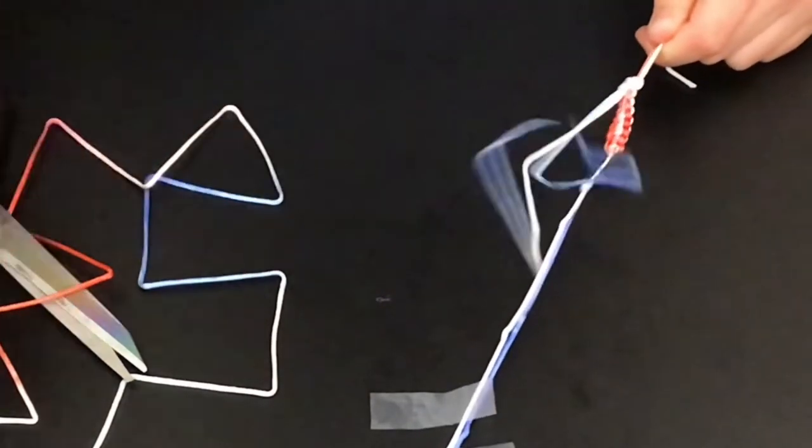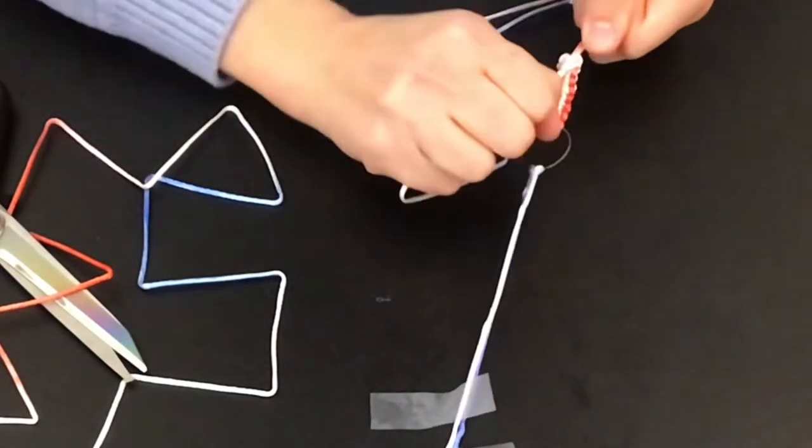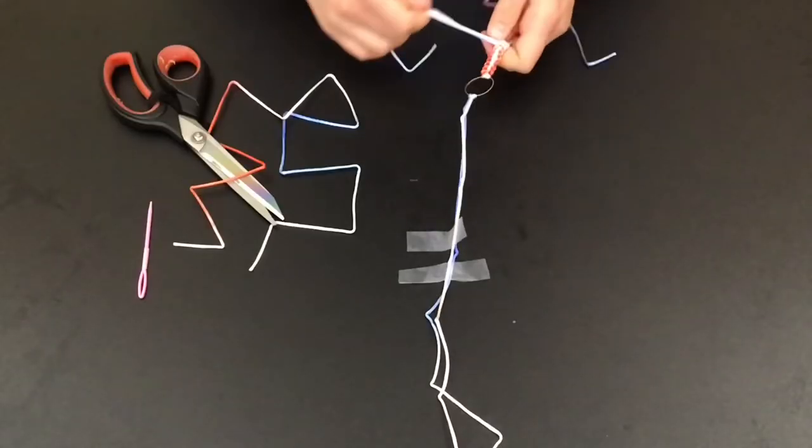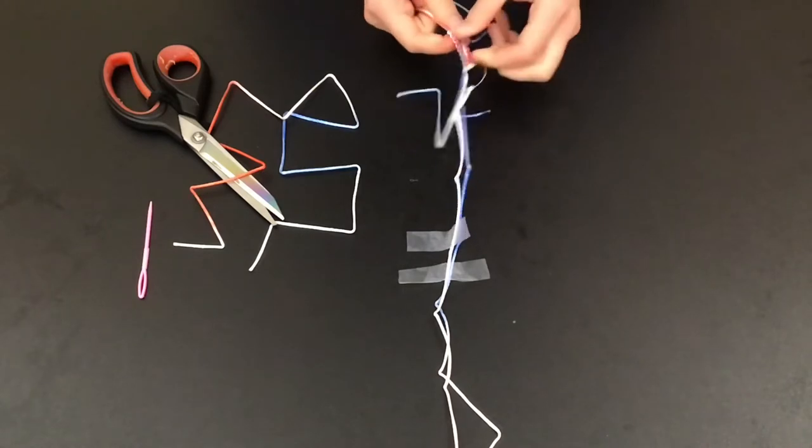Once you're done pulling both through, you can just trim them and tighten them. You're going to do the exact same thing on the other side. So do the same number of knots that you did on this side and then use your needle to thread those strings back through.